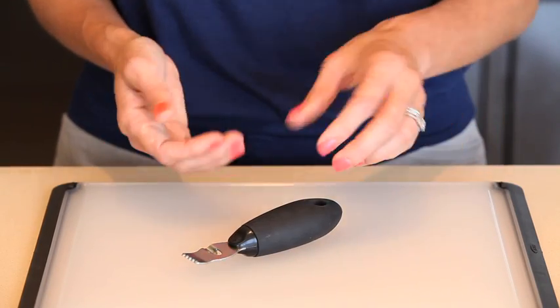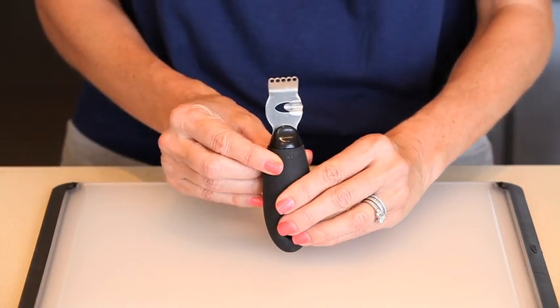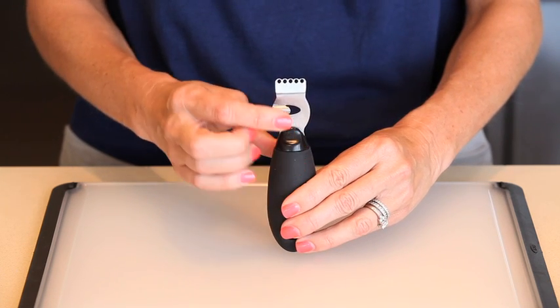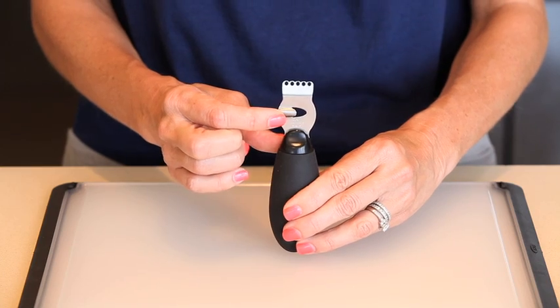The OXO Lemon Zester is two tools in one. The sharp holes in the stainless steel head remove the zest from the pith of lemons and other citrus fruit easily, and a channel knife in the back makes it easy to create beautiful garnishes.